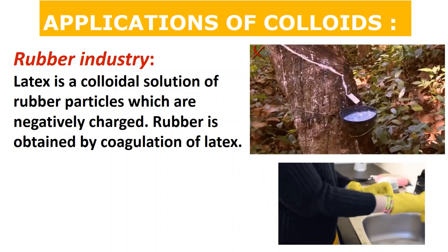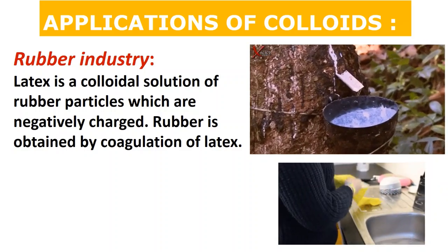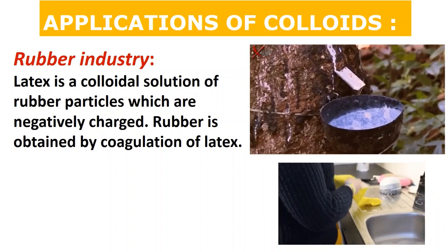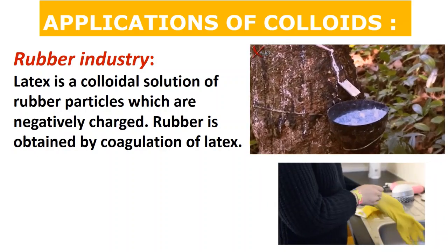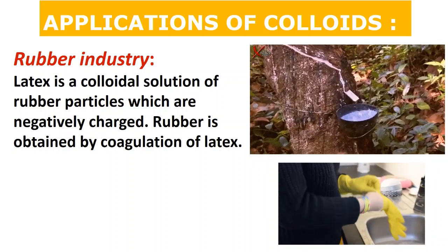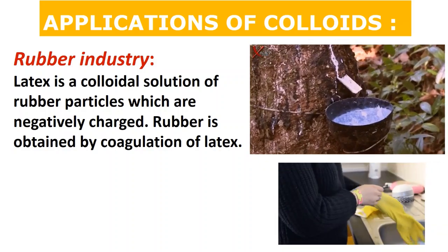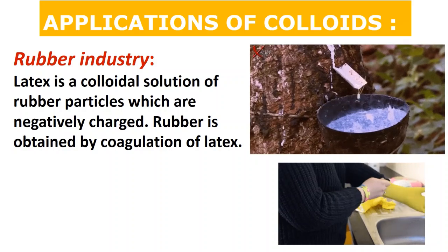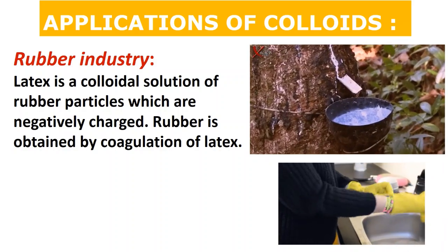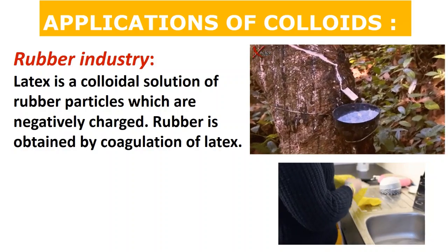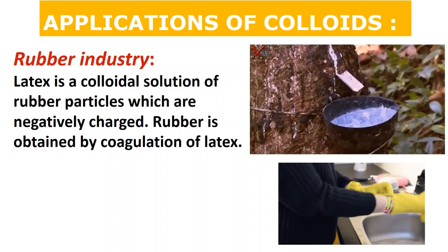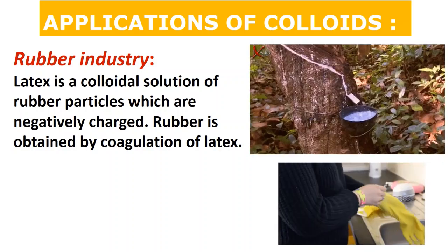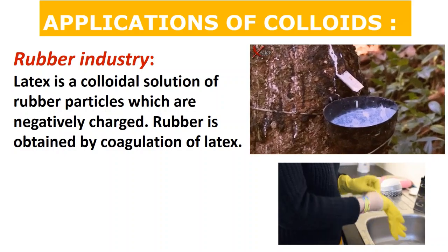Latex is a colloidal solution of negatively charged rubber particles. When latex is coagulated — typically using electrodes where the negative charge is neutralized by positive electrodes — charge neutralization converts it from a sticky colloid into a proper solid material. This rubber can then be used for making rubber erasers, rubber goods, and many more products. Remember: latex is a colloidal solution of rubber particles which are negatively charged, and coagulation with electrodes gives us usable rubber.